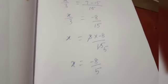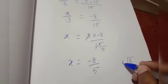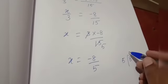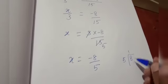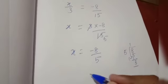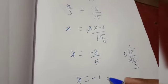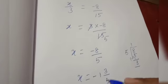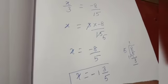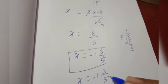This is also improper. We can convert into a mixed fraction. To convert, we divide 8 by 5. How many 5s in 8? Only one 5 is there. So 8 minus 5 is 3, remainder 3. Therefore x is equal to minus 1 and 3 by 5. This is the value of x for this equation. x is equal to minus 1 and 3 by 5.